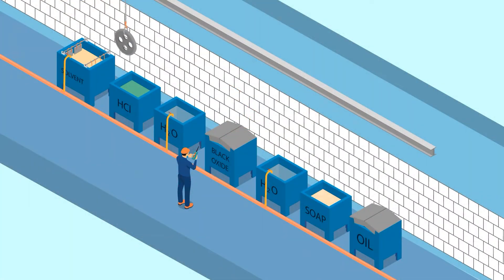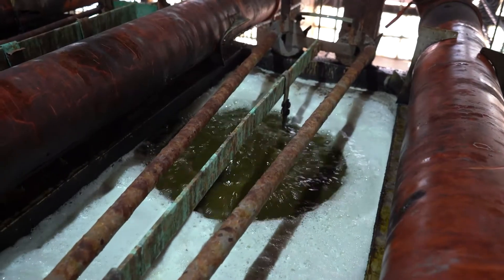The way our system is different and what makes it really a game-changer is that our technology does not require the part that's being printed on to be submerged into a bath. A lot of these electroplating baths are either really acidic or really alkaline, and that really limits what materials you can actually plate onto or grow structures onto.